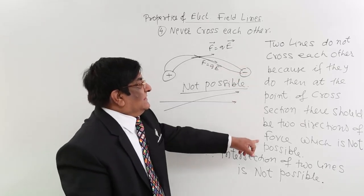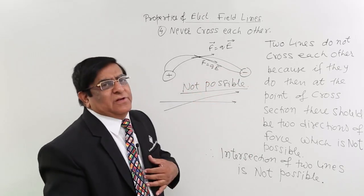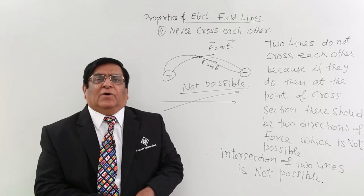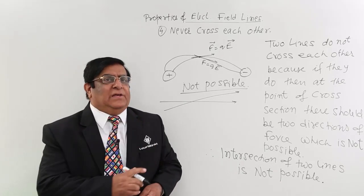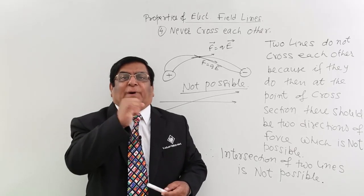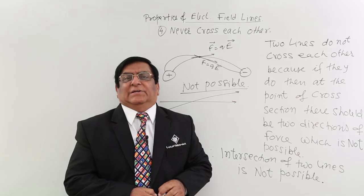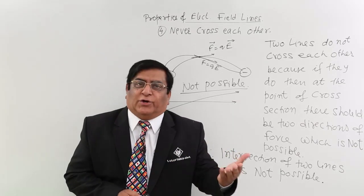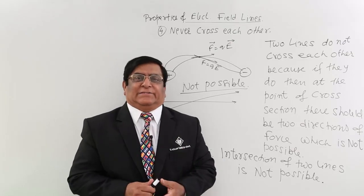So this is the reason for that, and it is a very peculiar situation. This is mostly asked in examinations - intersection of two lines is not possible. Now, next we will study that when lines start from a charged particle, there is a particular rule about it. In which direction it can start, in which direction it cannot start. That will be in the next lecture.